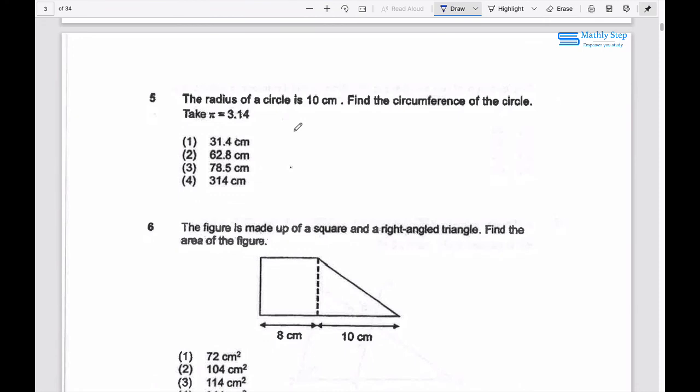Question 5: The radius of the circle is 10 cm. Find the circumference of the circle. Take pi equals 3.14. So 2 pi times r equals 2 times 3.14 times 10 equals 62.8 cm. This is the correct answer.